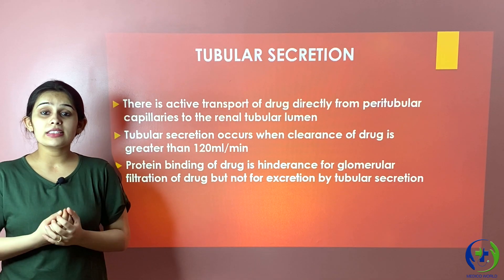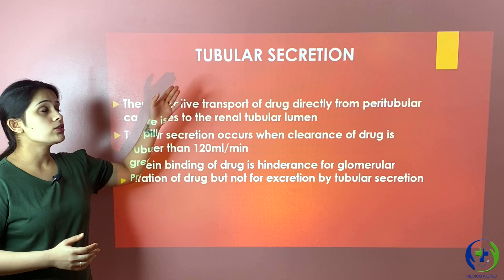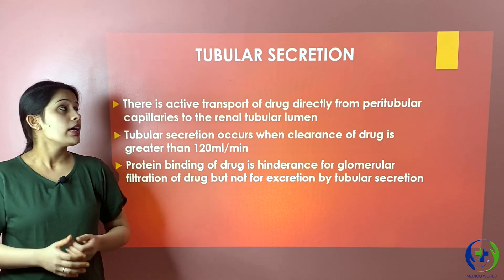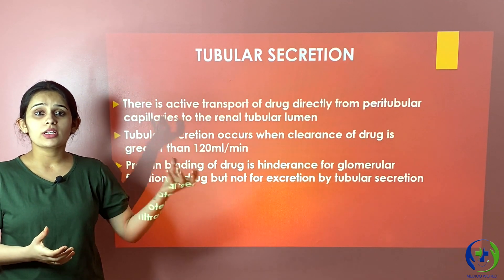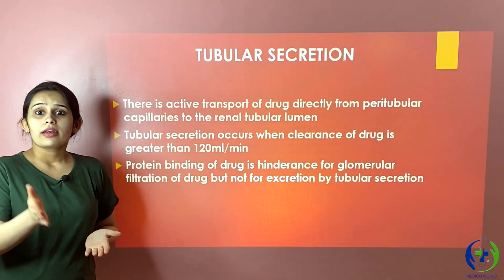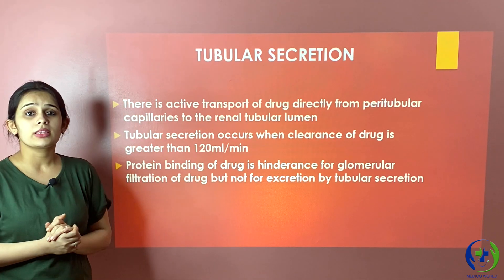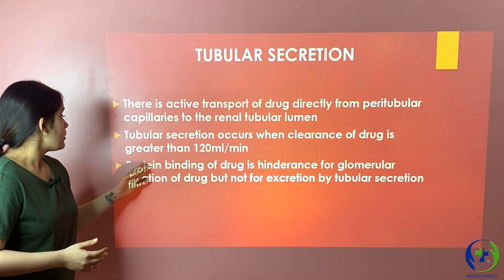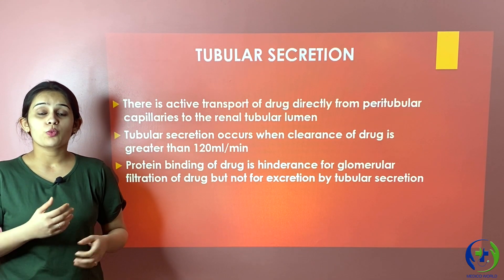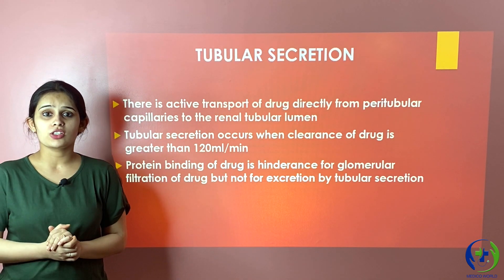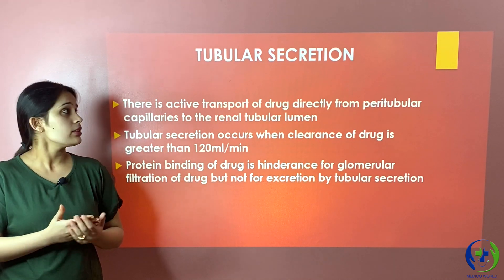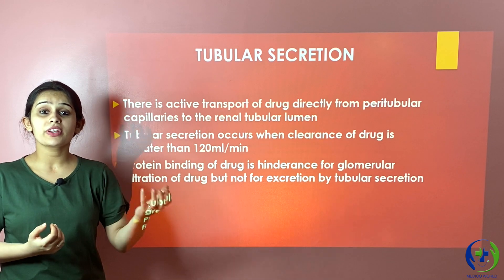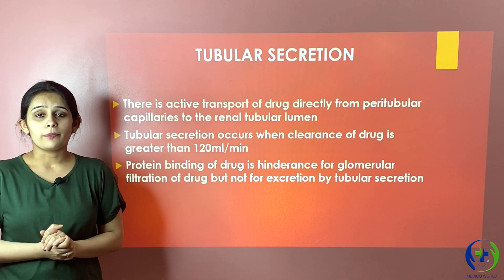In tubular secretion, drugs whose clearance rate exceeds 120 ml per minute are excreted through this mechanism. 120 ml is filtered through glomerular capillaries, but the remaining amount is actively transported from the peritubular capillaries into the renal tubules. This secretion method is not well developed in neonates and infants, so drugs are given at lower dosages to children. Importantly, protein binding is not a hindrance here — as the free drug is secreted, the protein-bound drug dissociates into free drug and becomes available for secretion.